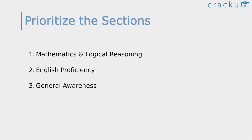So firstly, prioritize the sections. Mathematics and Logical Reasoning are the first priority, next English Proficiency, and next General Awareness. All these sections are important, but mainly Mathematics and Logical Reasoning are somewhat tough compared to the remaining sections, which is why we are giving first priority to Mathematics and Logical Reasoning.